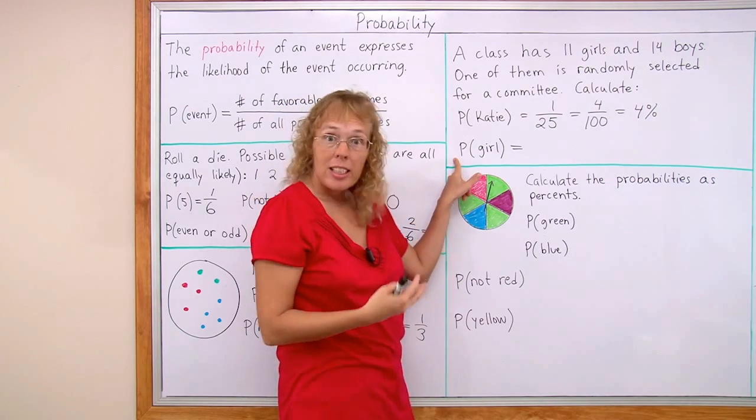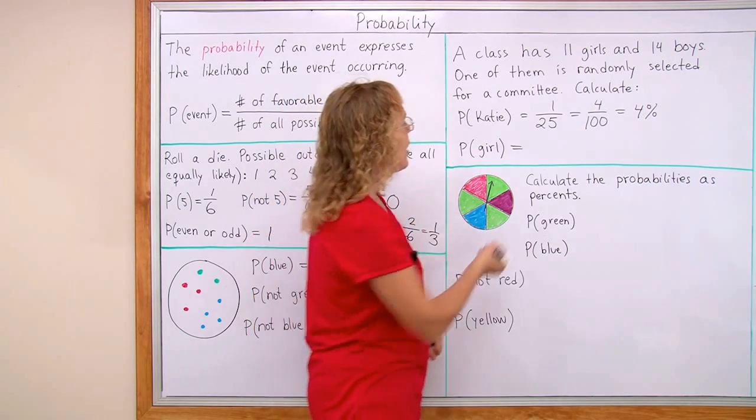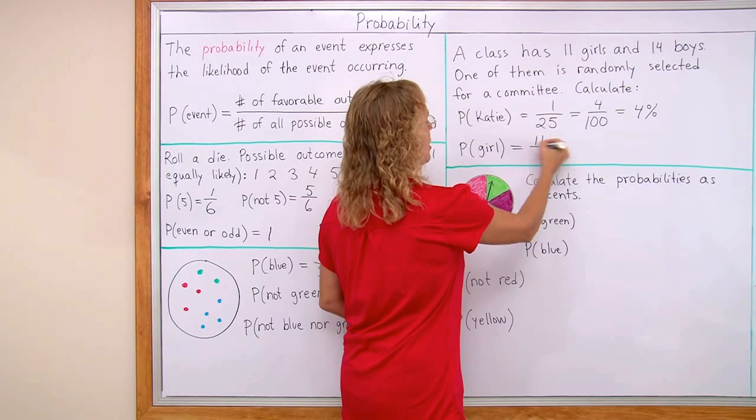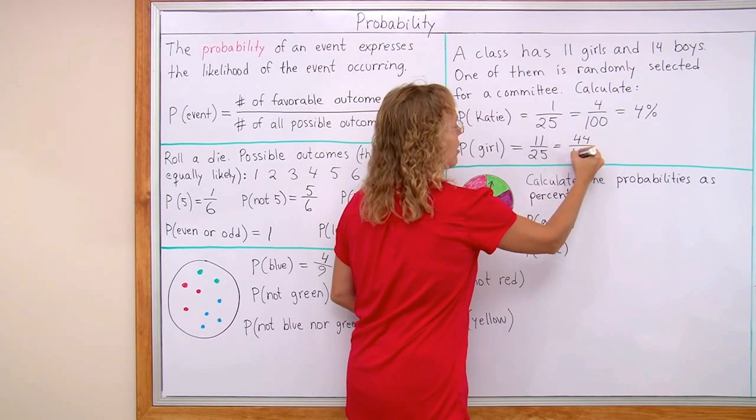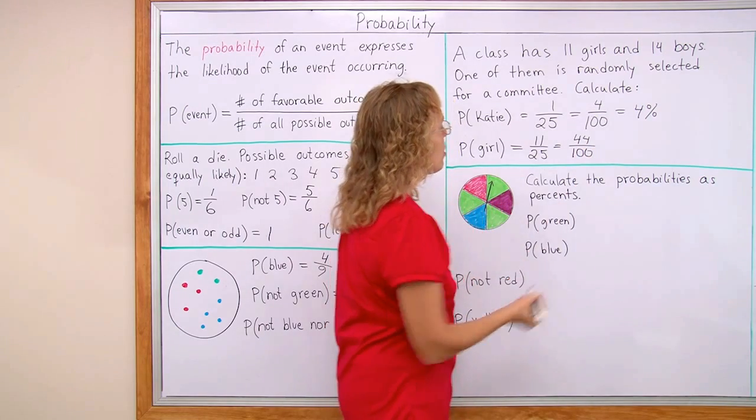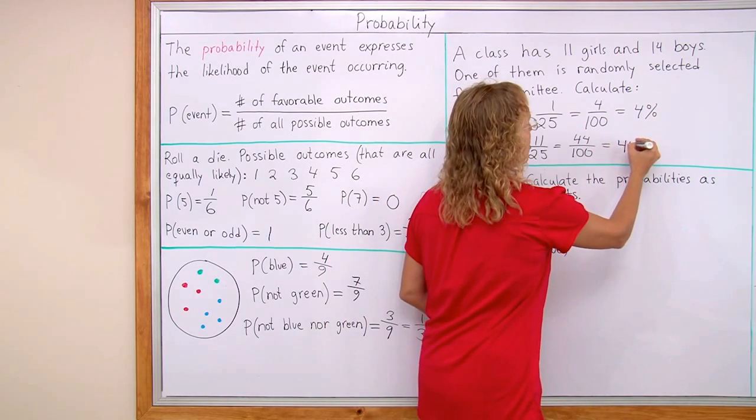What's the probability that a girl gets selected? Okay. There's eleven favorable outcomes this time and twenty-five in total. Again I can write an equivalent fraction. Forty-four of a hundred and so this is forty-four percent.